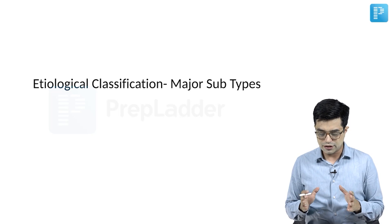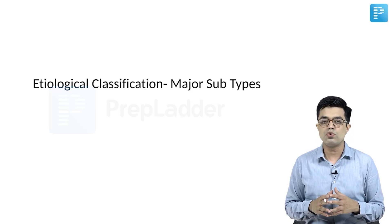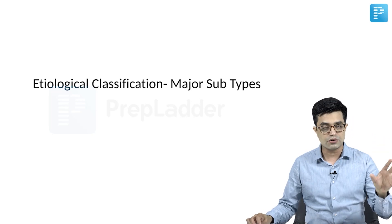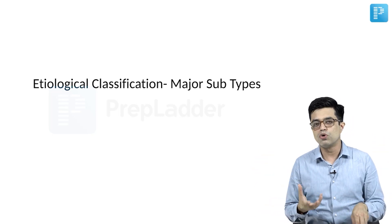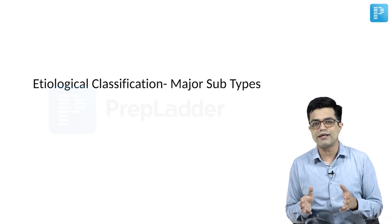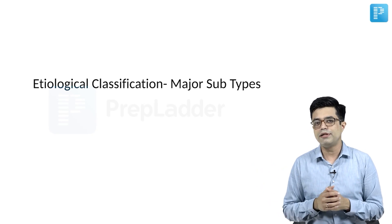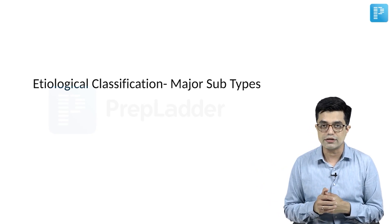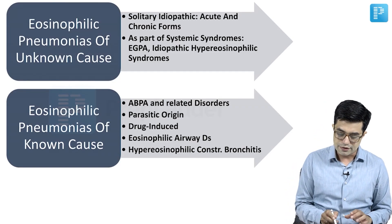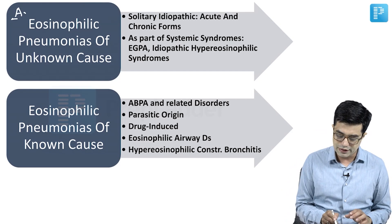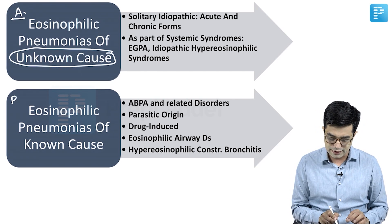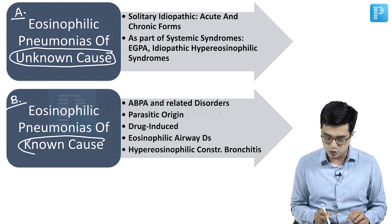Etiological classification broadly divides eosinophilic diseases into two categories: those where the cause is known and those where the cause is unknown. Since most of these eosinophilic lung diseases have a pneumonia-like presentation, the term is interchangeably used with eosinophilic pneumonias. The first category is eosinophilic pneumonias of unknown cause, and the second category is eosinophilic pneumonias of known cause.